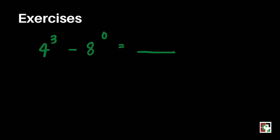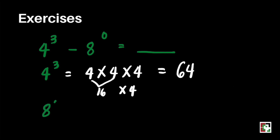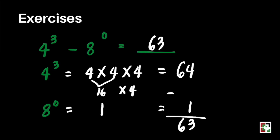Next we have 4 cubed minus 8 to the 0th power. We first get the value of 4 cubed: 4 times 4 times 4. 4 times 4 is 16, and 16 times 4 is 64. For 8 to the 0th power, take note that any number raised to the 0th power is equal to 1. So 64 minus 1 is equal to 63. Our final answer is 63.